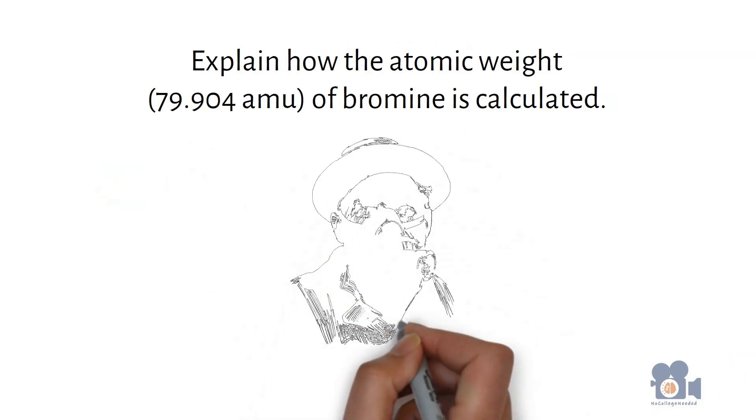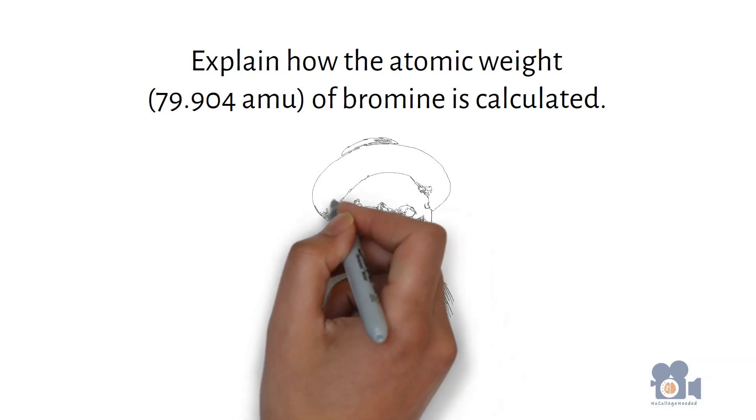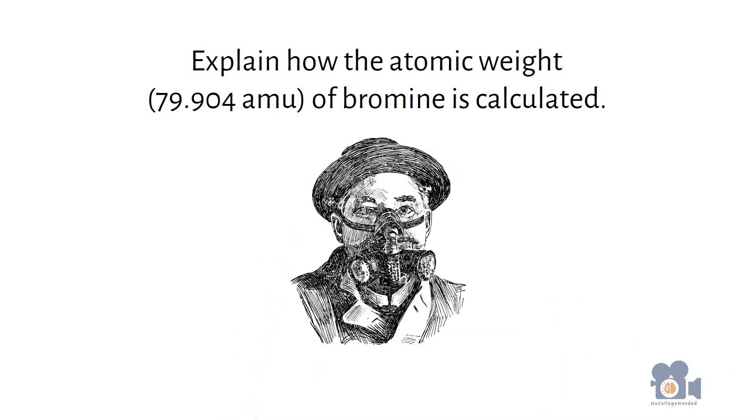Based on what you learned, think about the following question. Explain how the atomic weight of 79.904 AMUs of bromine is calculated.